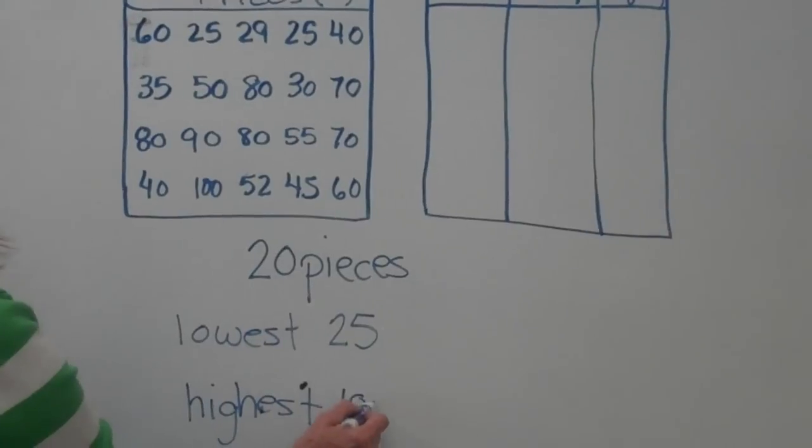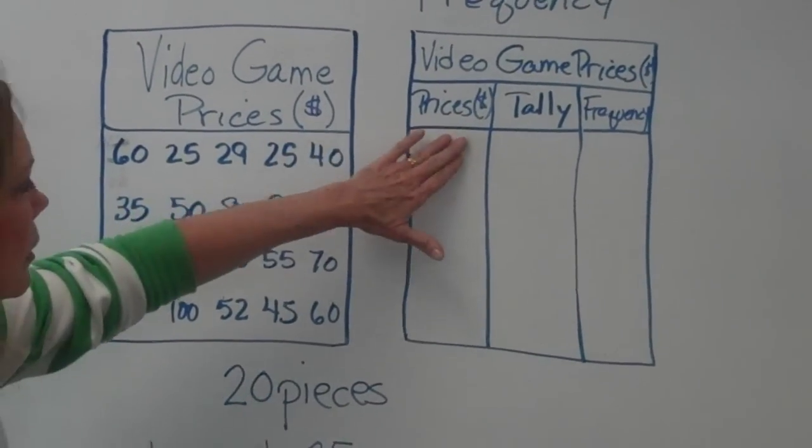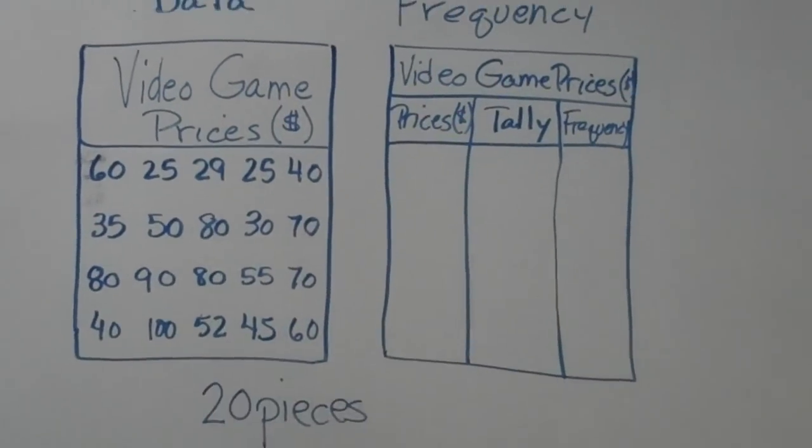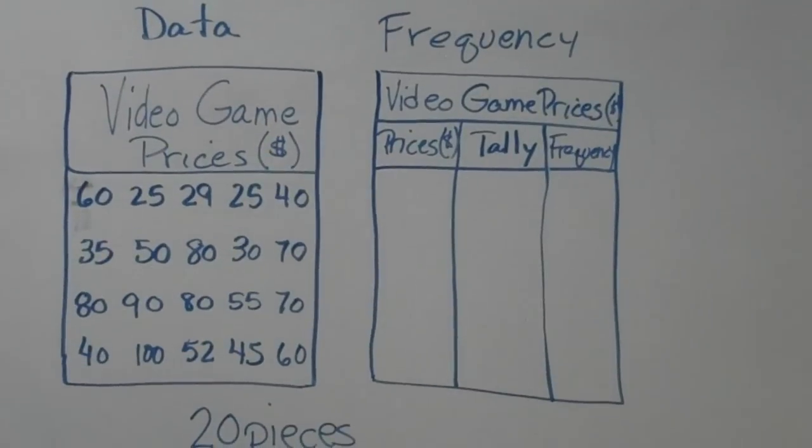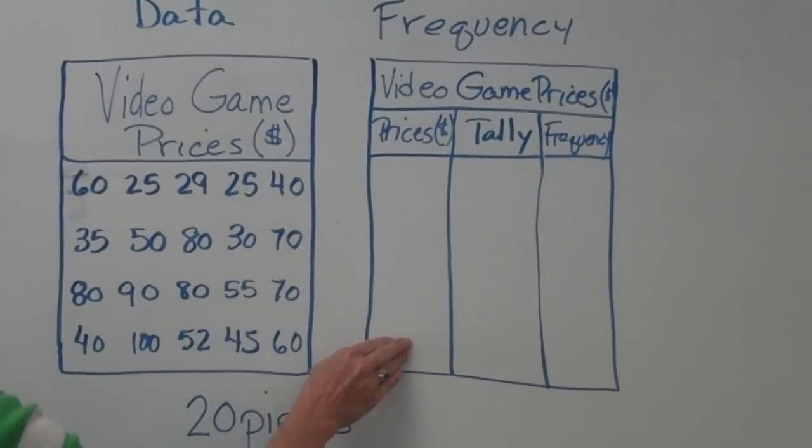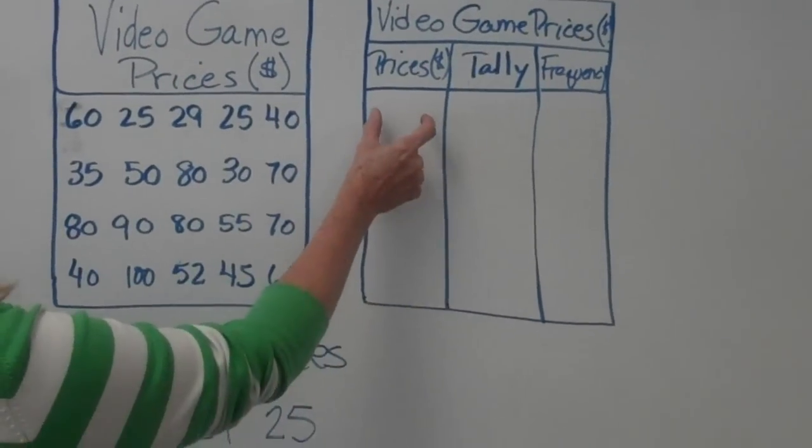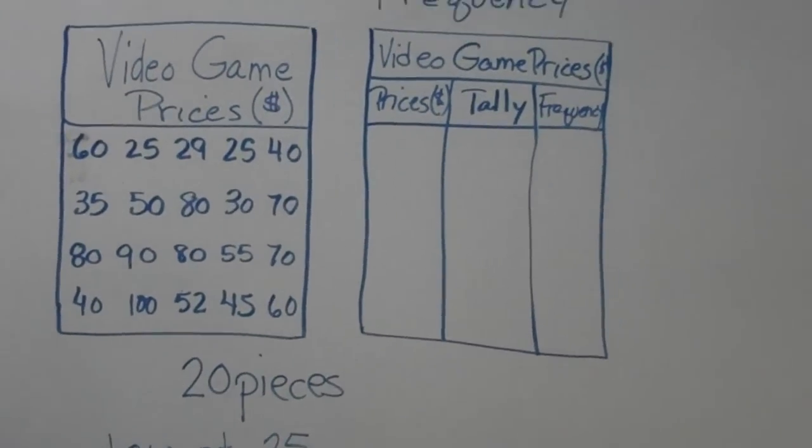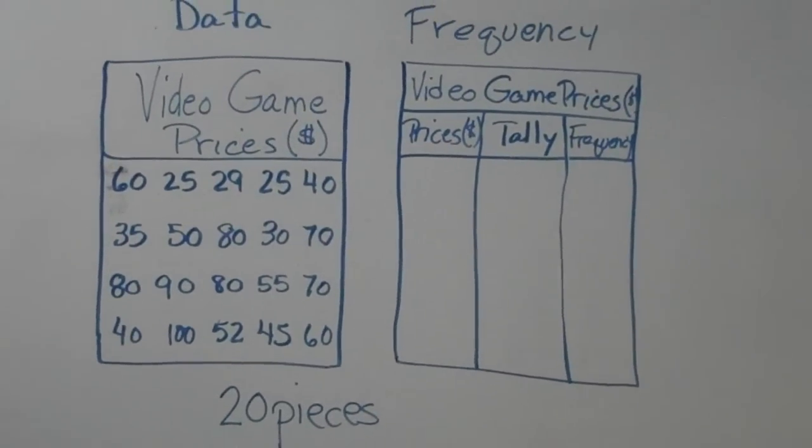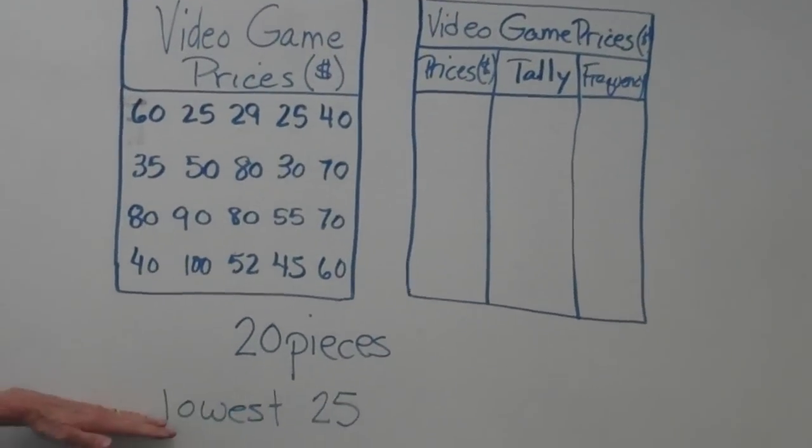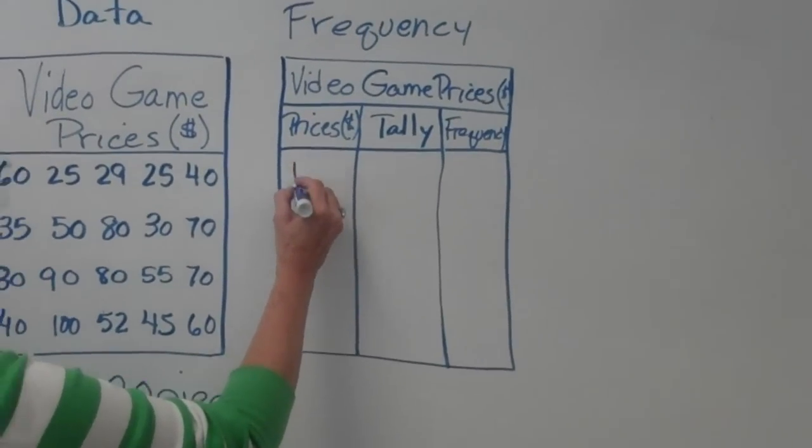The reason we're making a note of the lowest and highest is so we know what our scale will be under the price column on our frequency chart. We need to, instead of listing every single piece of data down the price column, we need to put intervals, and those intervals need to be exactly the same. So let's see, we could start with 0 to 25, or actually we're going to go 1 to 25.